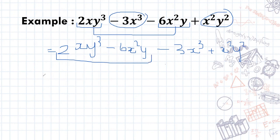For these two, I can take out a 2 and an x and a y. What I'm left with here is just y² minus 3x.